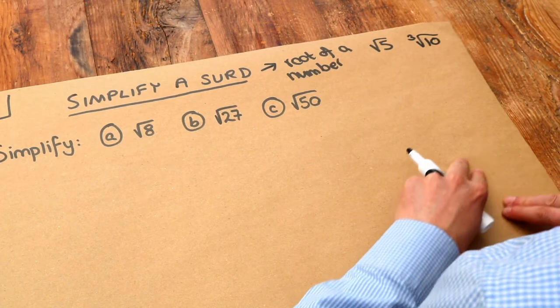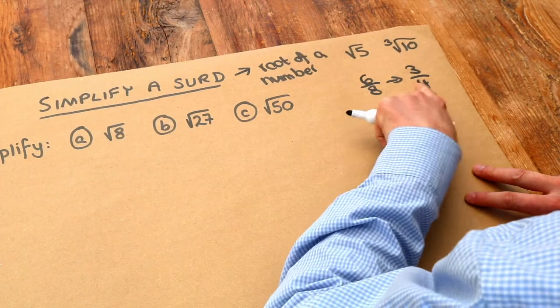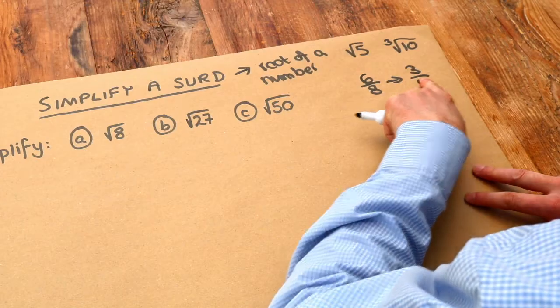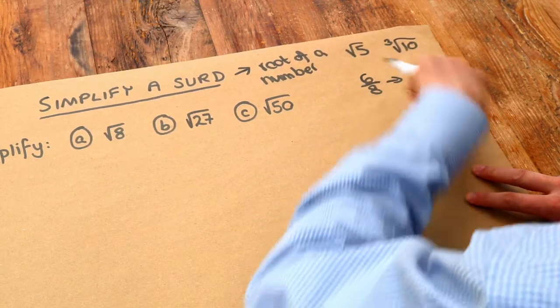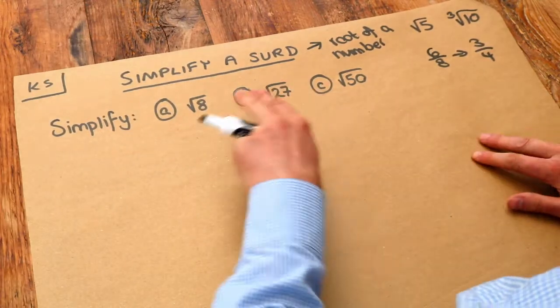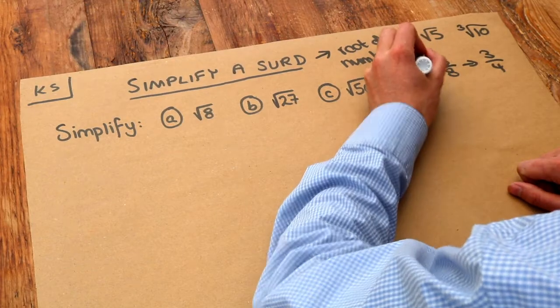But we're going to mostly deal with square roots in this series of videos. Now with fractions, we know we can simplify them by making the numbers as small as possible - whatever we divide the top by, we divide the bottom by. We like the numbers to be small in a fraction. The same is true for surds. We want the number under the root to be as small as possible.